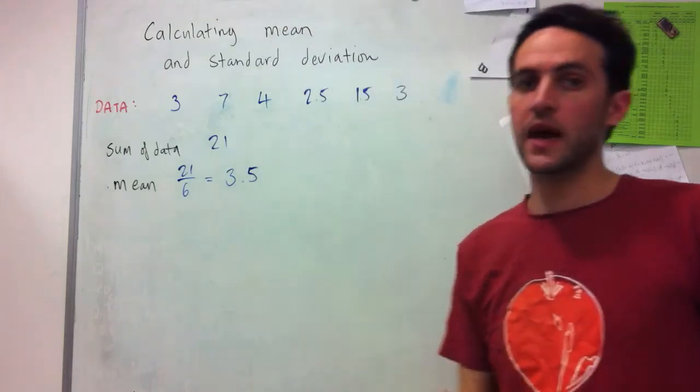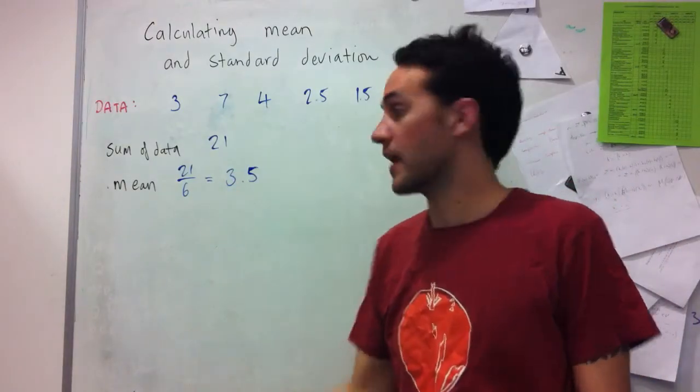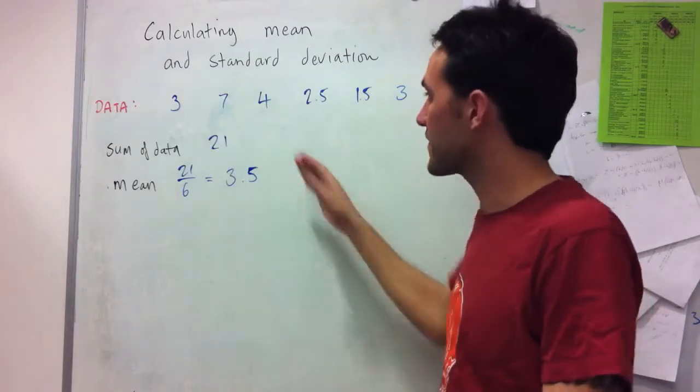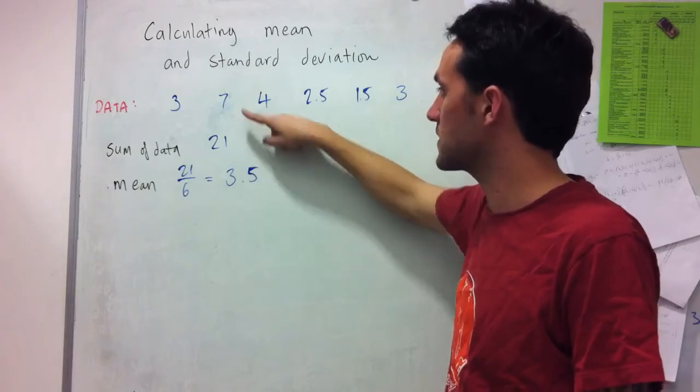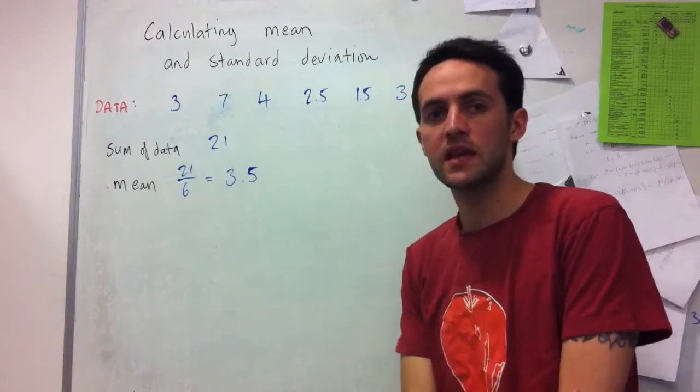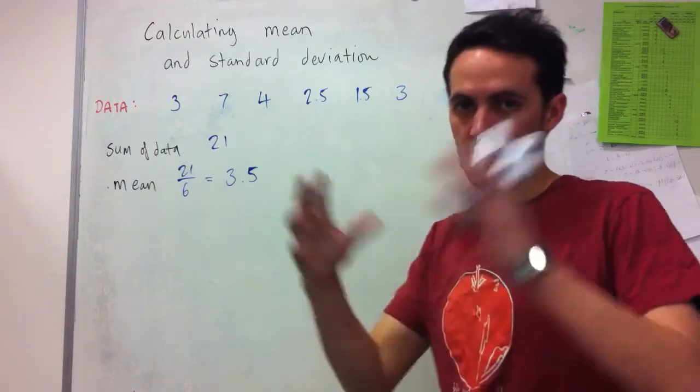So the mean of my data is 3.5. This 3.5 is meant to be somehow representative of what's normal for this data. We can see that a lot of values differ reasonably significantly. The 7 is double the 3.5, but in general this is meant to give one of the best indications of what the data looks like overall.